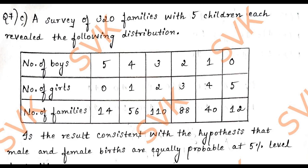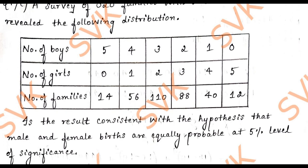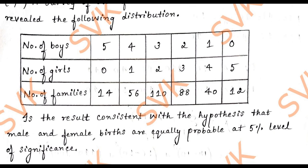We shall consider question number 7c. A survey of 320 families with 5 children each revealed the following distribution. They have given the distribution here: number of boys, number of girls, number of families. We need to analyze whether male and female births are equally probable at 5% level of significance.